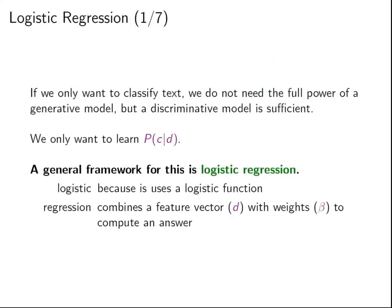One way to use feature representations to classify text is logistic regression. We throw away the generative approach and just say we want a clean, discriminative model — we just want to learn the probability of a class given a document. It's called logistic regression because it uses a logistic function, and regression because it combines a feature vector with weights to compute an answer.